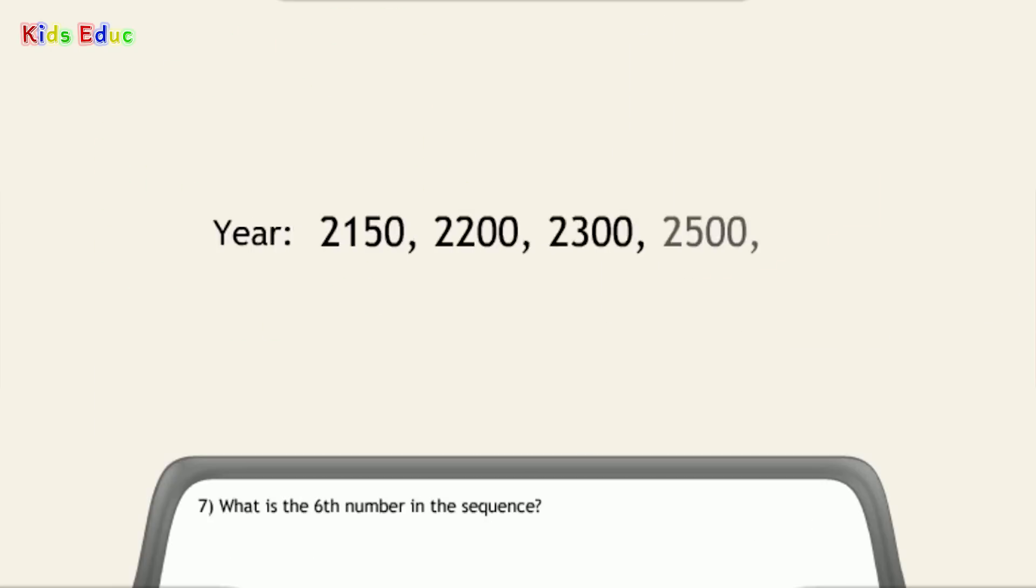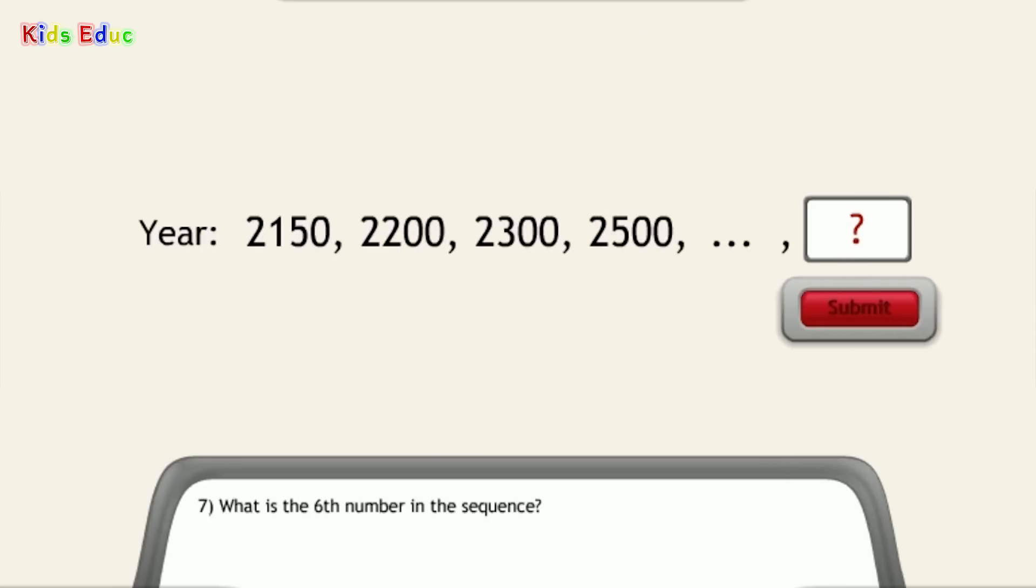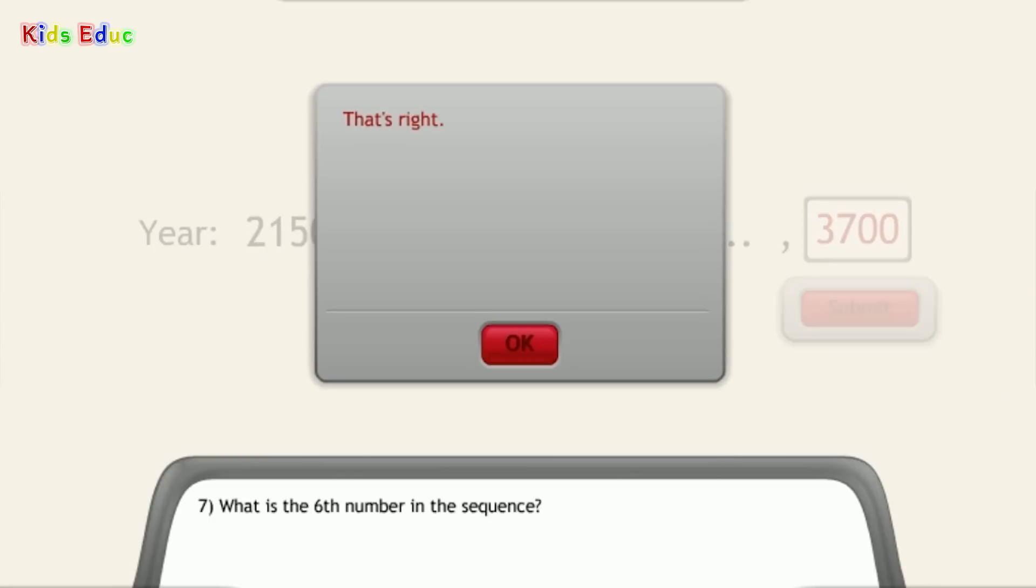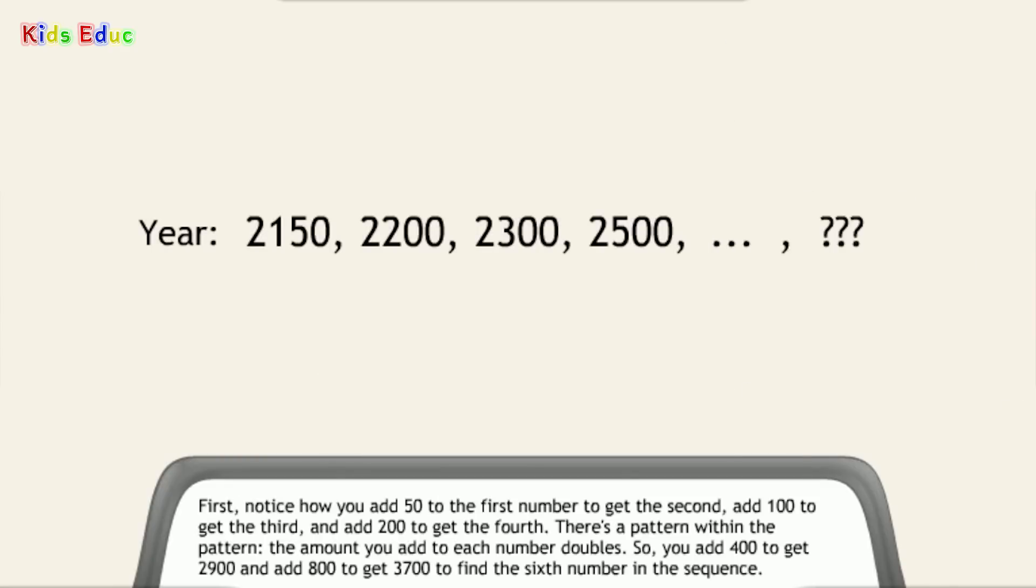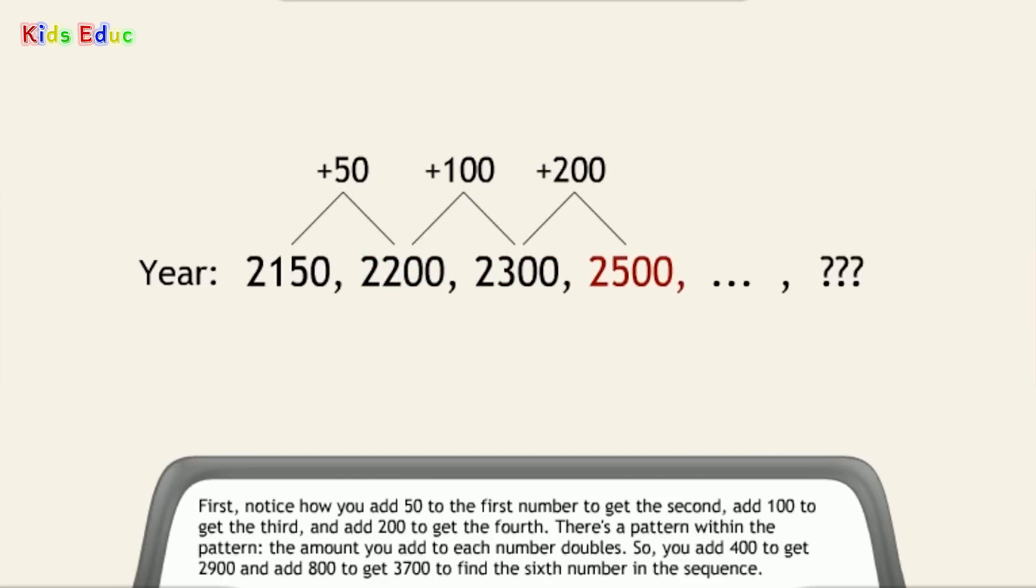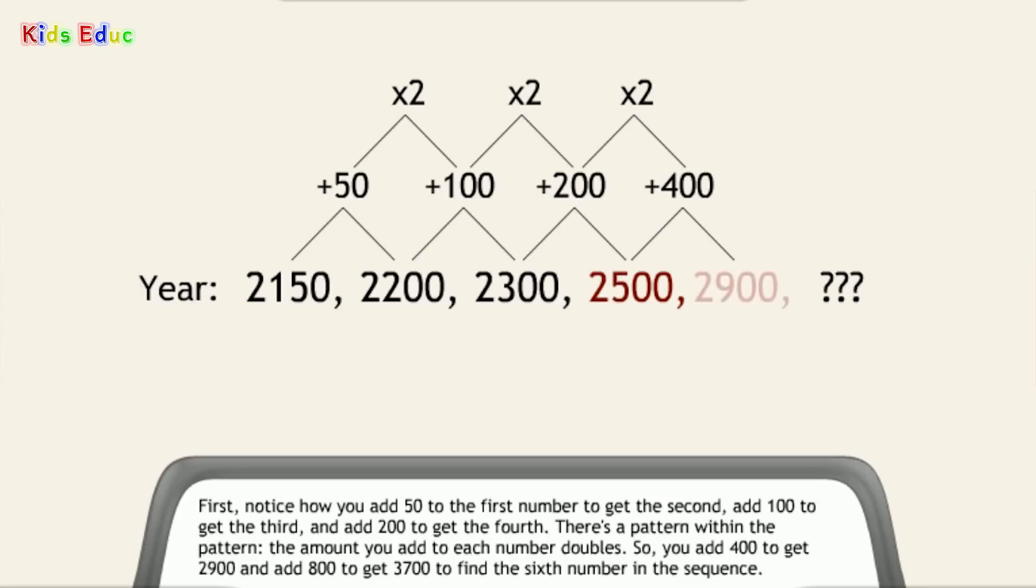Number 7. What is the 6th number in the sequence? 3,700. That's right. First, notice how you add 50 to the first number to get the second, add 100 to get the third, and add 200 to get the fourth. There's a pattern within the pattern. The amount you add to each number doubles. So, you add 400 to get 2,900, and add 800 to get 3,700 to find the 6th number in the sequence.